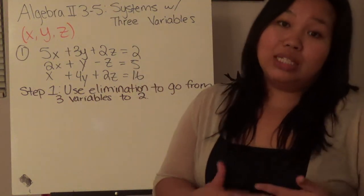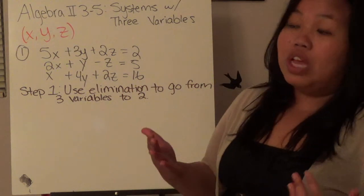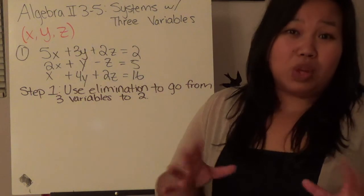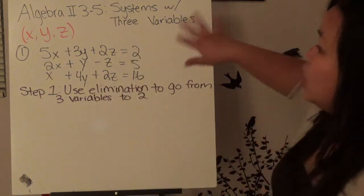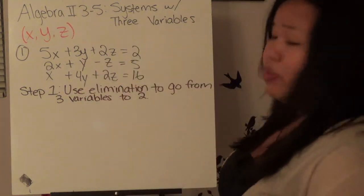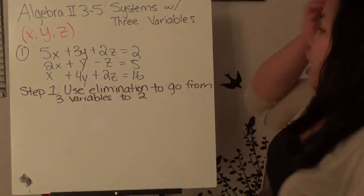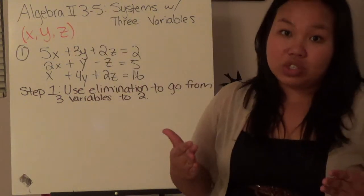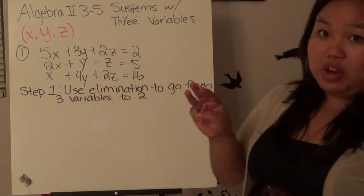Your assignment in class is not going to be too terribly long — kind of like the last section, where you have a few problems but they count as two, because these are pretty lengthy. We're going straight into the problem, and it's going to take about three boards before we finish. Our answer, instead of just x and y, is three-dimensional, so we're going to have an x, y, and z — three variables.